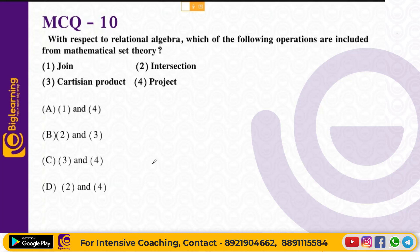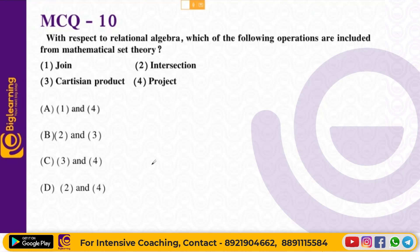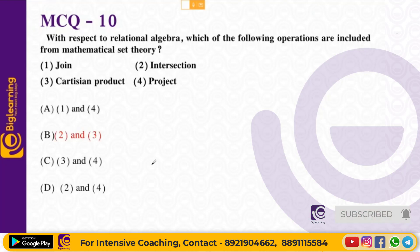Next question: with respect to relational algebra, which operations are derived from mathematical set theory? From set theory, relational algebra borrows union, intersection, and Cartesian product. Among the given options — join, intersection, Cartesian product, and project — the answer is intersection and Cartesian product (option B).